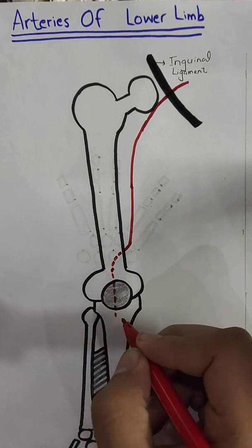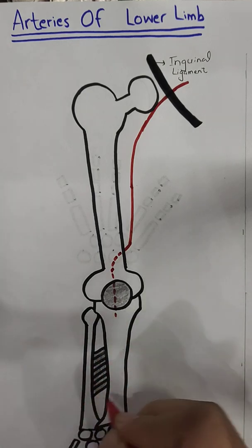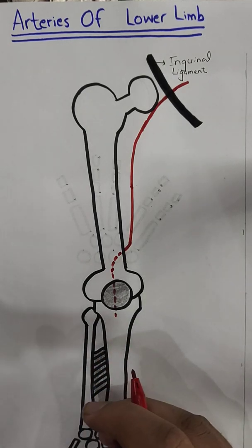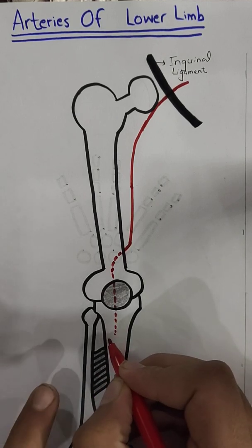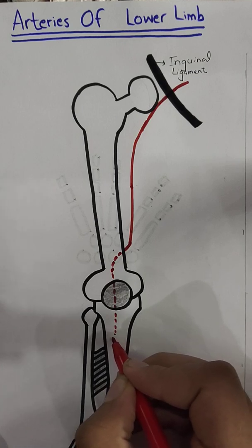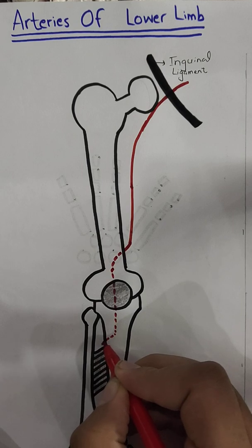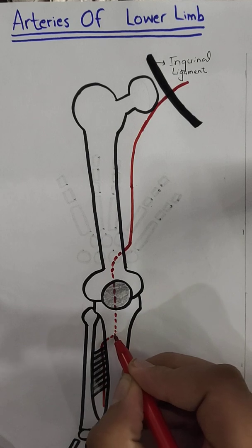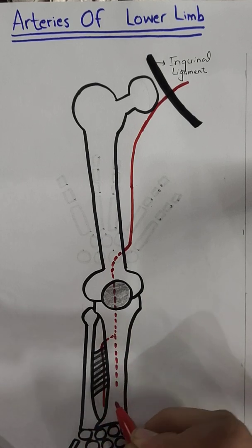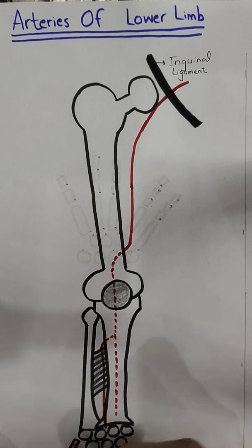As the popliteal artery crosses the knee joint, it divides into two branches: the anterior tibial and the posterior tibial. The anterior tibial moves to the anterior side, passing through the space superior to the interosseous membrane, and moves inferiorly. The posterior tibial moves posteriorly. The anterior tibial then continues into the foot as the dorsalis pedis artery.